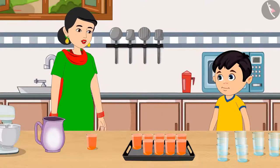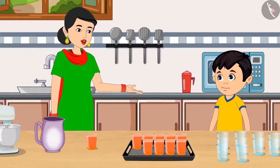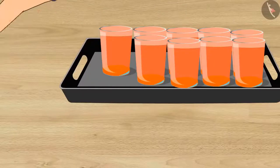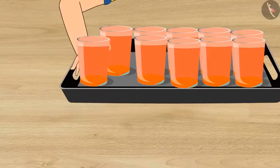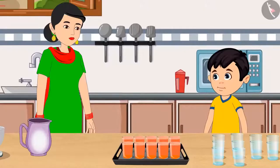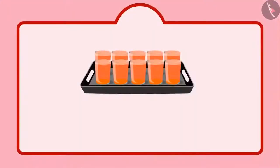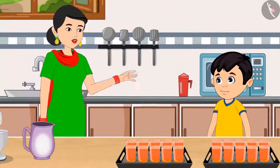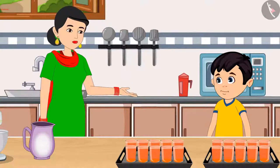So this means, Chotu, right now we have 9 units. Chotu said, 'Yes, Mummy, I remember.' Now if we put one more glass in this plate, it will be a group of 10 glasses, and we call it one 10. Chotu agreed: 'You are absolutely right.' His mother said, 'Here you go, Chotu, your sherbet is ready.'